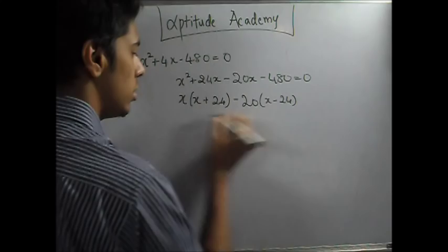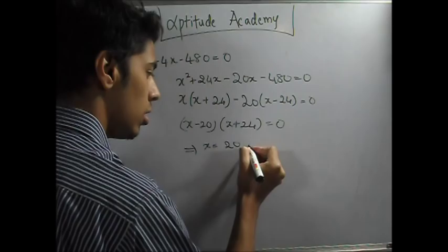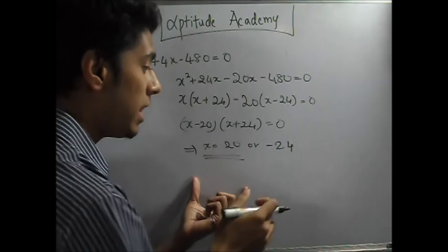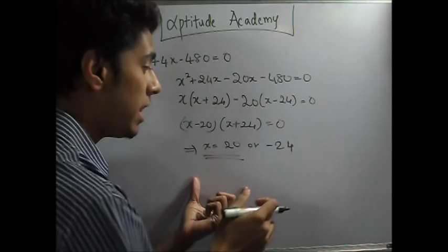So this implies either x equals 20 or x equals minus 24. Since age can't be minus 24, x equals 20. But they've asked for Nikita's age, and Nikita's age is 240 divided by x. So it's 240 divided by 20.